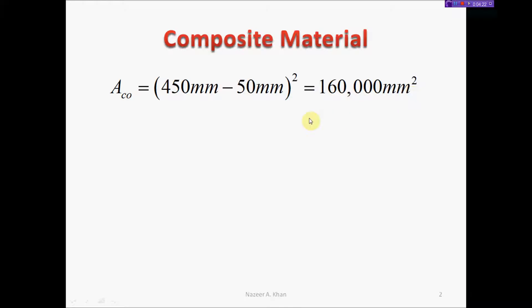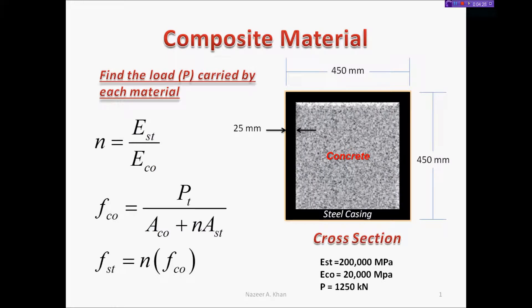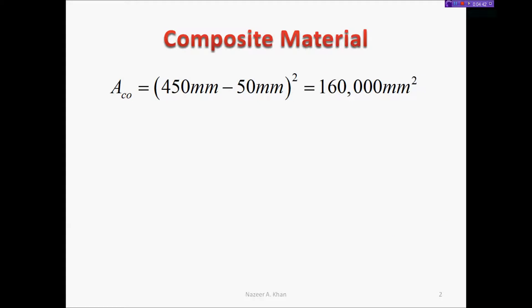Now we need to calculate the area of steel. To get this, I'll take the entire cross-sectional area, 450 squared, and subtract the area of concrete. That's 450 squared minus 160,000, which gives 42,500 square millimeters for the steel area.